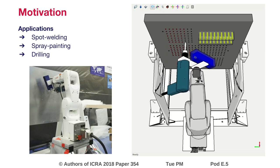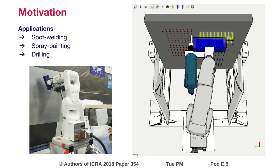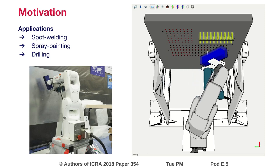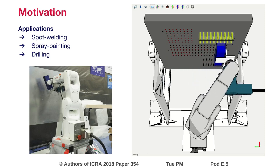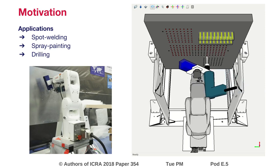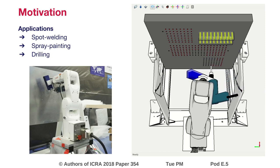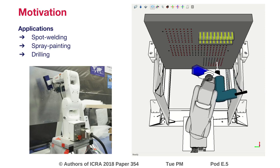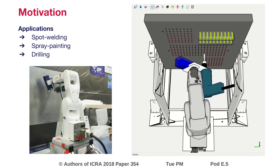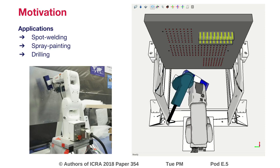In many industrial robotics applications such as spot welding, spray painting, or drilling, the robot is required to visit sequentially multiple targets. The robot travel time among them is a significant component of the overall execution time. This travel time is greatly affected by the visit order and the robot configurations used to reach each target. The optimization of these two elements is known as the robotic task sequencing problem.